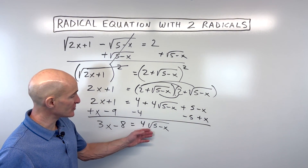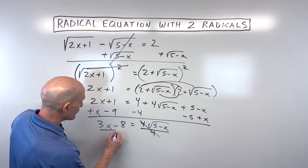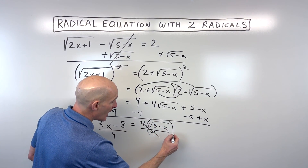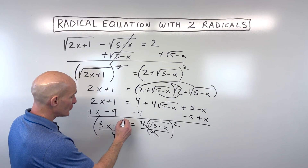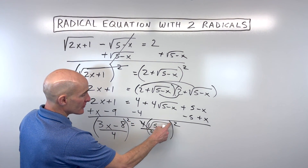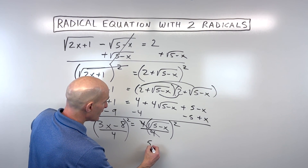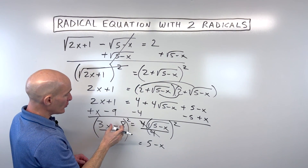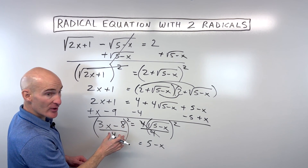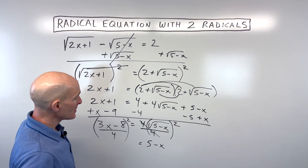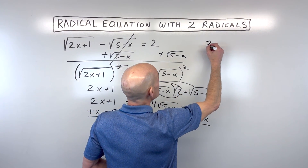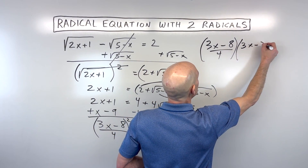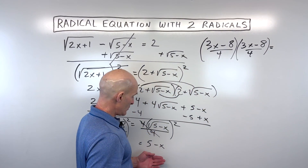We divide both sides by 4 to get the square root by itself. Since we now have the square root isolated, we square both sides — the square and square root undo one another, leaving 5 minus x on the right. On the left, we think of (3x minus 8) over 4 squared as two copies of that quantity: (3x minus 8) over 4 times (3x minus 8) over 4, all equal to 5 minus x.